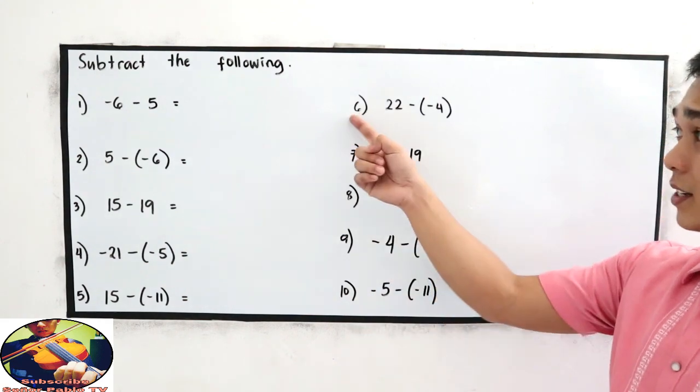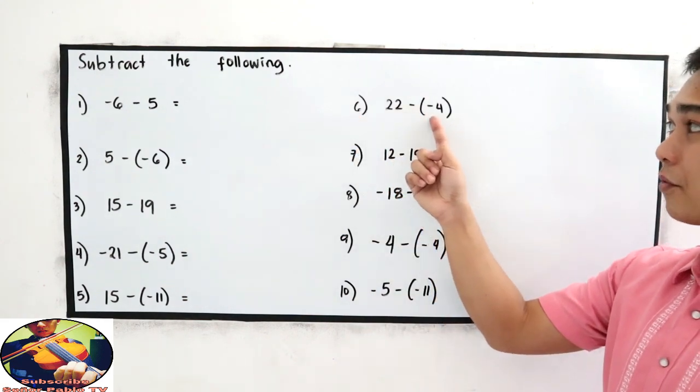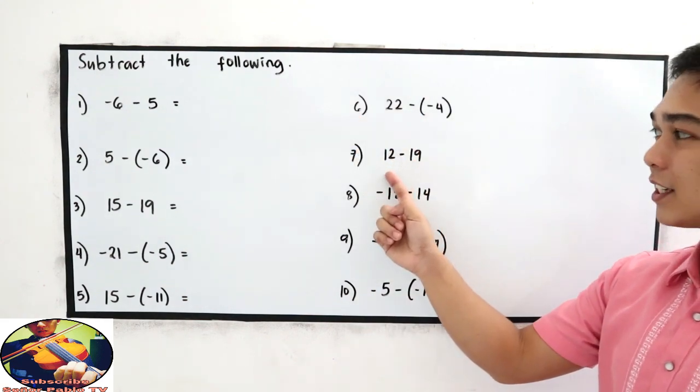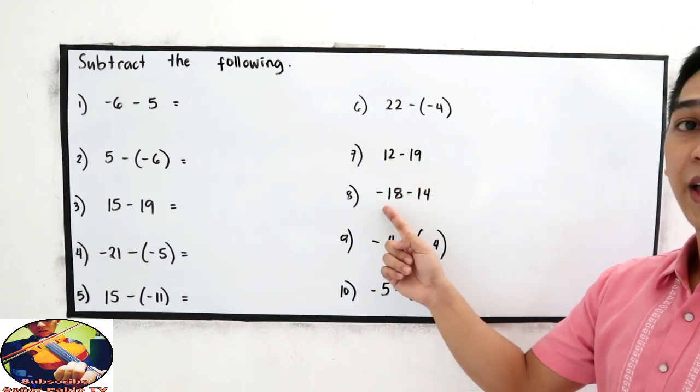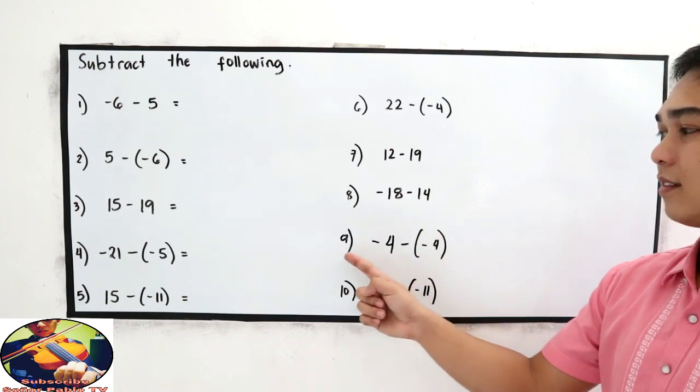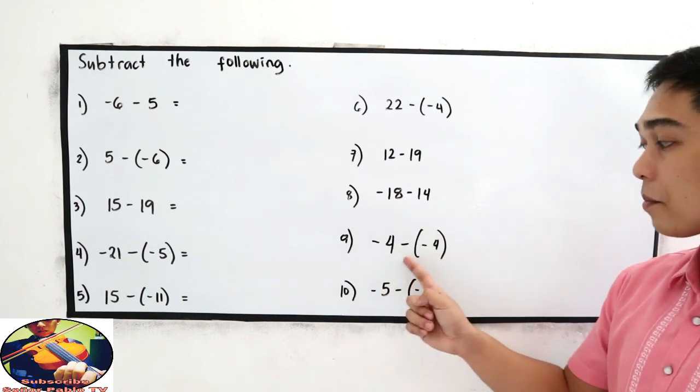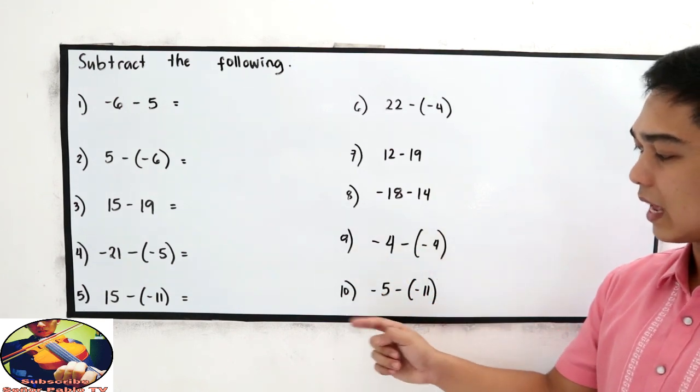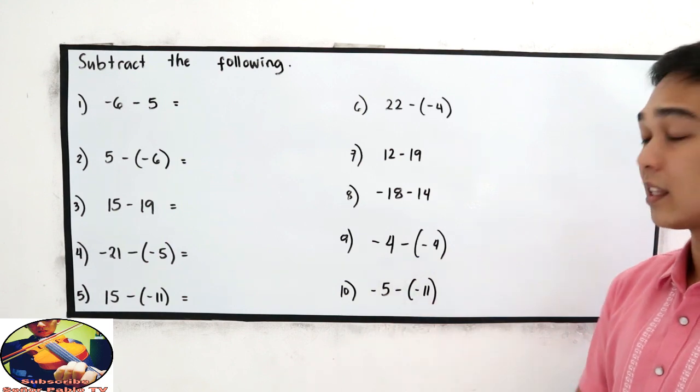Number 6, 22 minus negative 4, number 7, 12 minus 19, number 8, negative 18 minus 14, number 9, negative 4 minus negative 4, and number 10, negative 5 minus negative 11.